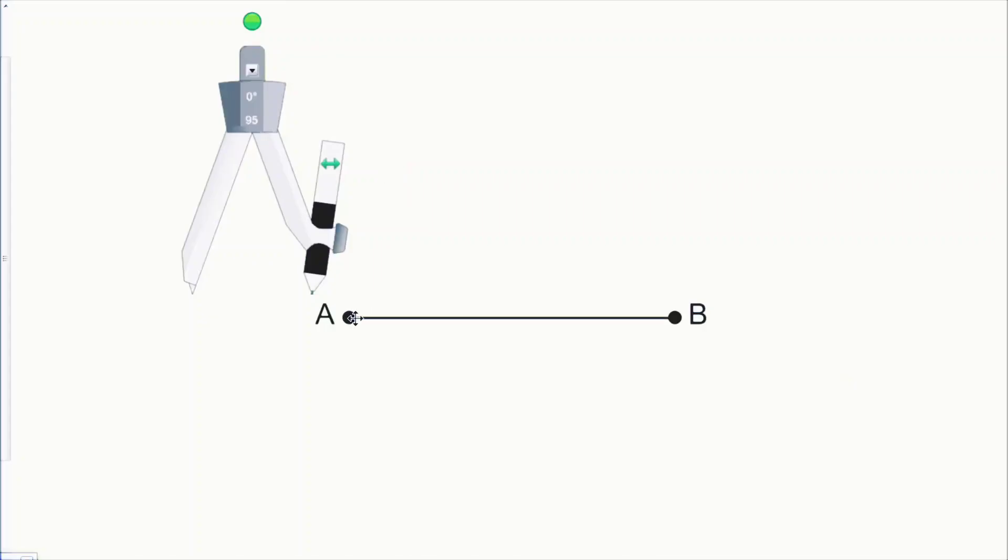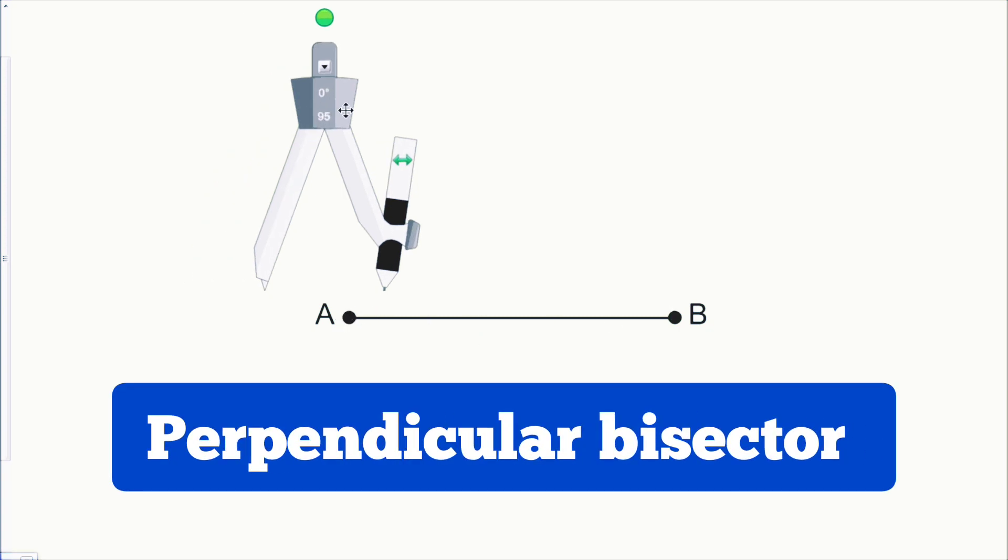Hey guys, so the goal of this video is to show you how to construct a perpendicular bisector on a line segment like AB.